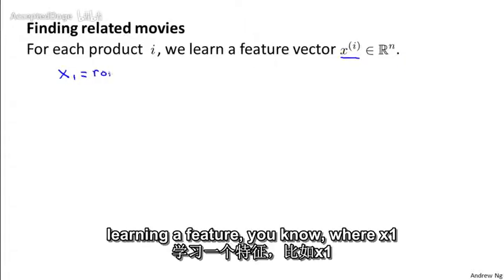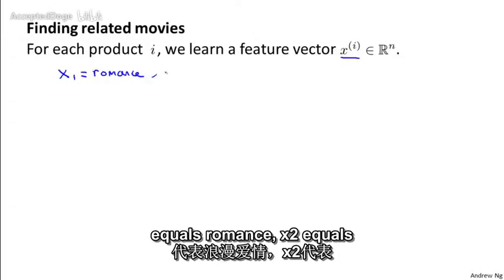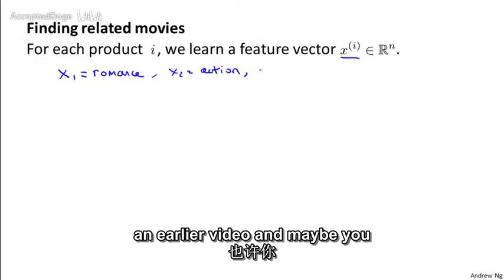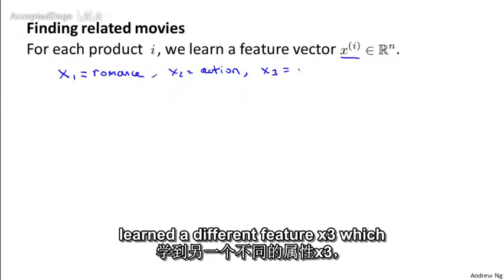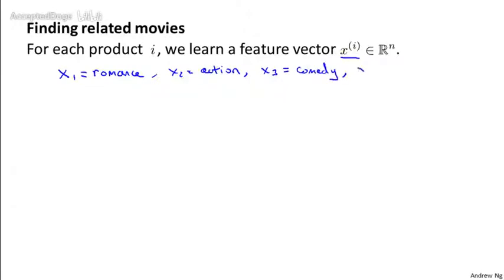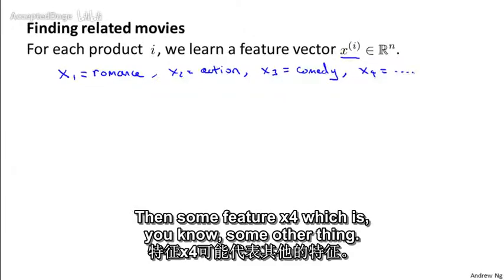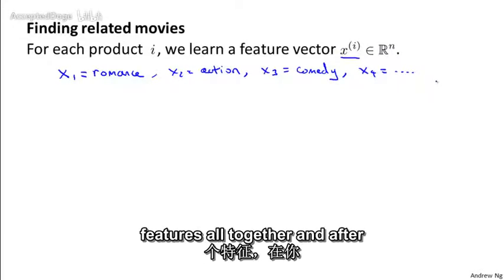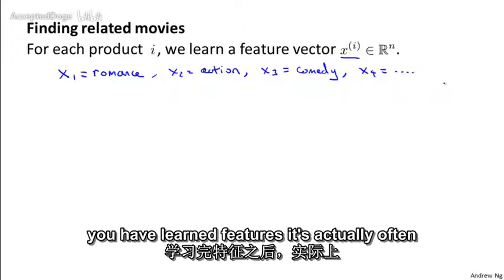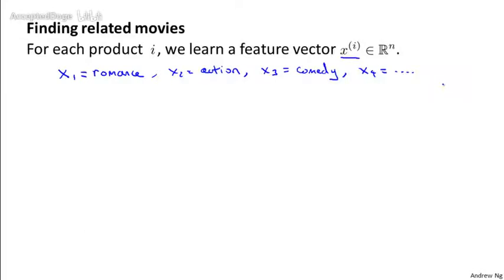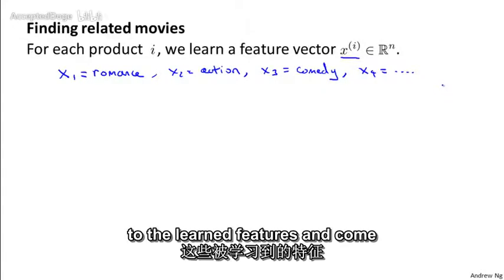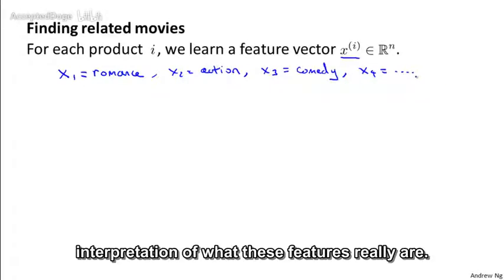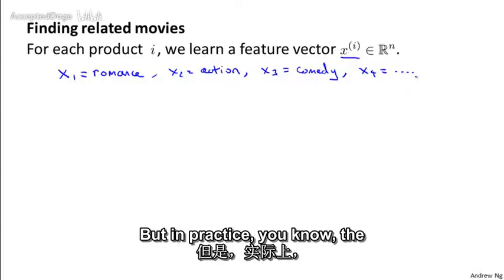And so maybe you end up learning a feature where x1 equals romance, x3 equals action. Similar to an earlier video and maybe you learn a different feature x3, which is a degree to which this is a comedy. Learn some feature x4, which is some other thing. And you have n features altogether. And after you've learned features, it's actually often pretty difficult to go into the learned features and come up with a human understandable interpretation of what these features really are.